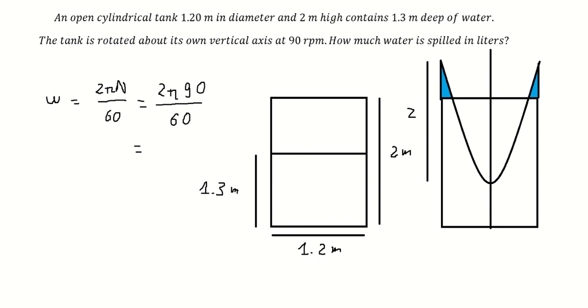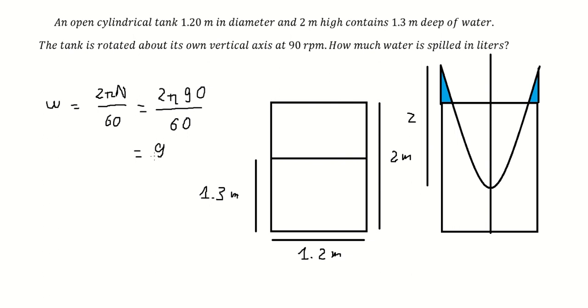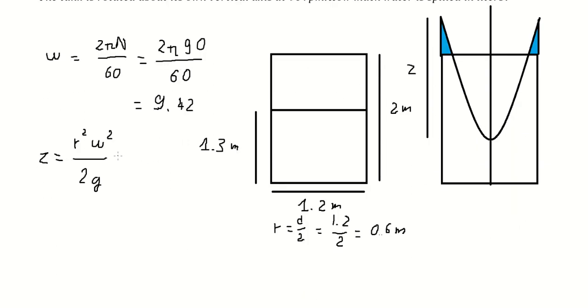So we have 9.42. After we have this, we can find z, which equals r²ω² divided by 2g. The radius r is the diameter divided by 2, so we got 0.6 meters. This is about gravitation g, so we put all the numbers in here.